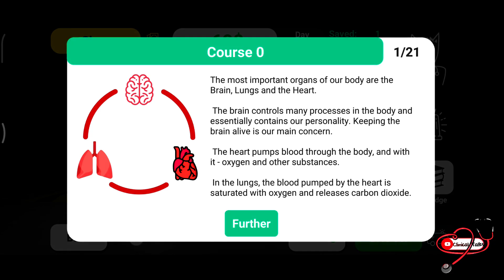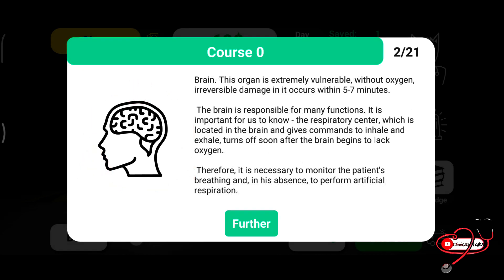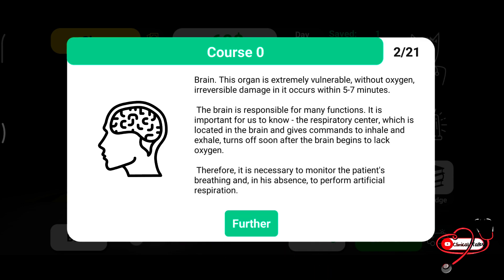The brain is extremely vulnerable. Without oxygenation, irreversible damage occurs within five to seven minutes. The brain is responsible for many functions. Importantly, the respiratory center, located in the brain, gives the command to inhale and exhale, and it turns off as soon as the brain begins to lack oxygen.